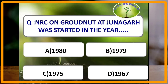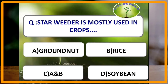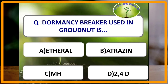NRC on groundnut at Junagadh was started in which year? The answer is 1979 — it was the first NRC which was started in India. Starveeder is mostly used in which of the following crops? Starveeder is mostly used in groundnut and rice. Dormancy breaker used in groundnut is Ethrel 1%, and it is used before sowing.